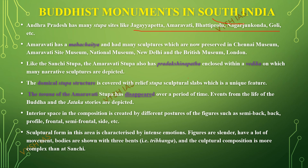We are going to see the Amaravati Stupa in detail. The Amaravati Stupa has a Maha Chaitya — the biggest chaitya hall — which is a prayer hall important for prayers and gatherings. It had many sculptures, which are now preserved in the Chennai Museum. The Amaravati site is not in good condition, so excavated pieces are preserved in the Chennai Museum, the Amaravati Site Museum, the National Museum New Delhi, and the British Museum London.